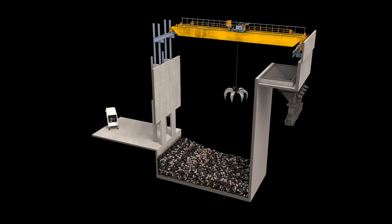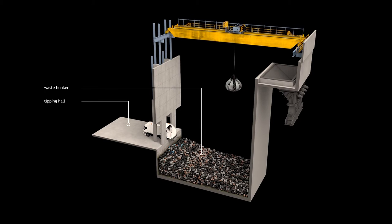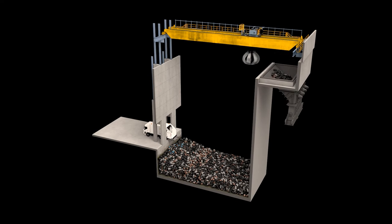Separated municipal solid waste or RDF from sorting plants is delivered to the site and stored in a bunker. A crane thoroughly mixes and feeds the waste into the hopper. From there it is pushed onto the grate by a ram feeder.